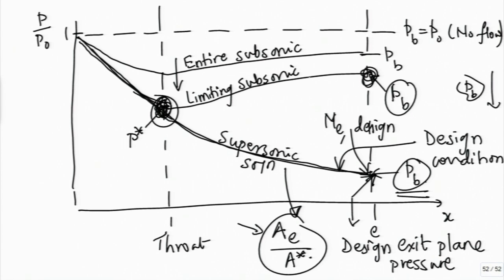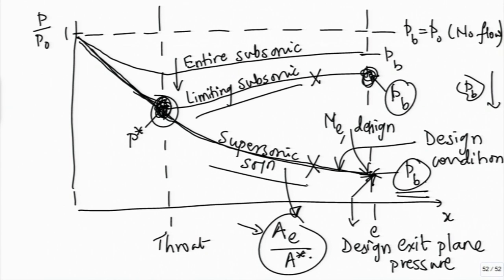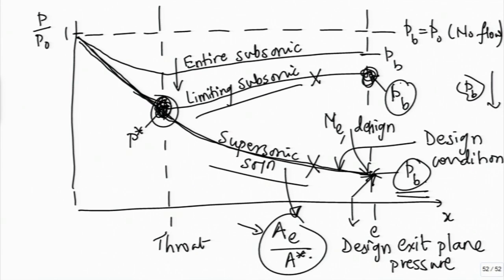So these are the two limiting cases corresponding to A_E over A star: one is the subsonic solution and the other is the supersonic solution. The question now is: what happens if we maintain the back pressure somewhere in between these two values? Let me draw a new figure for this.